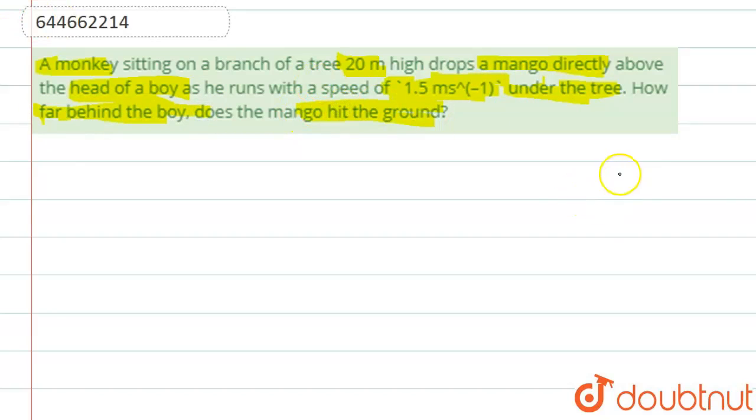So basically what is happening in the question? Let's suppose there is a tree. Let's suppose this is the tree and on this is the tree and on this there is a monkey. This is the monkey.